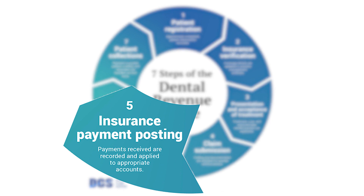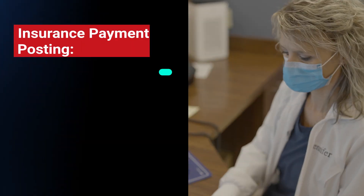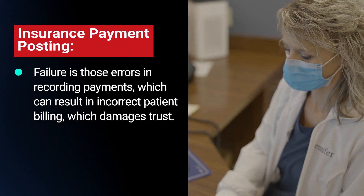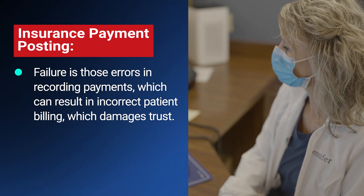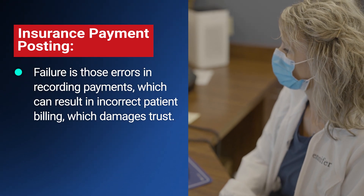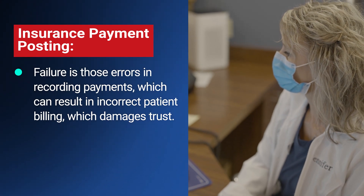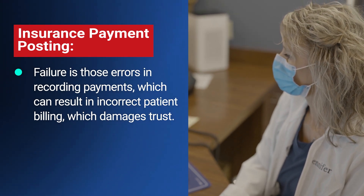Number 5 is insurance payment posting. In this step, you record and apply insurance payments correctly to avoid billing errors. The failure in this step is errors in reporting payments, which can result in incorrect patient billing, which damages trust.